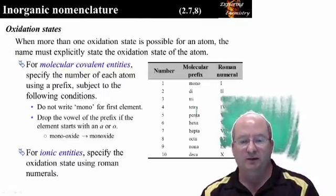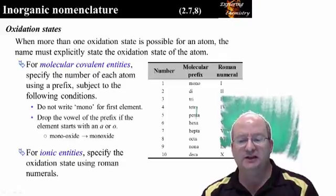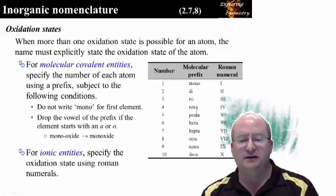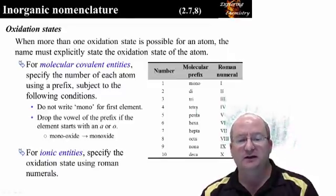This is a summary of the rules for denoting oxidation states in chemical names. If the bonding is covalent and there is more than one possible molecular formula, the number of each atom is specified using a prefix.